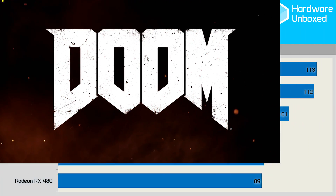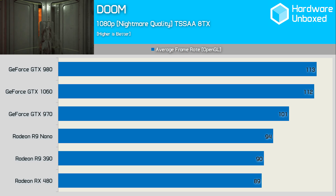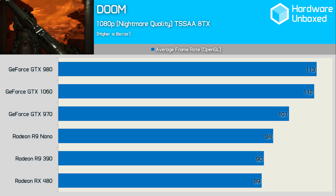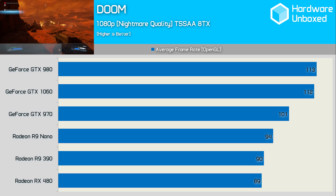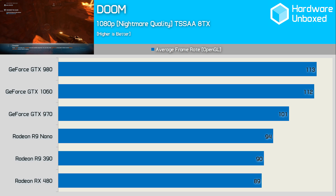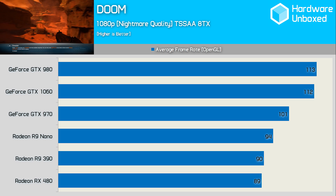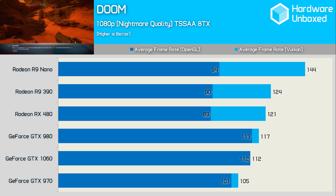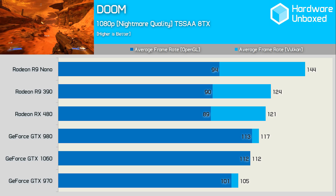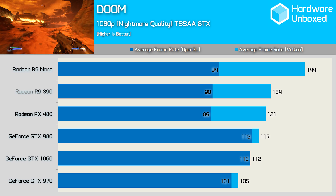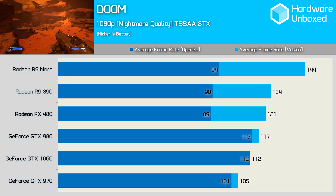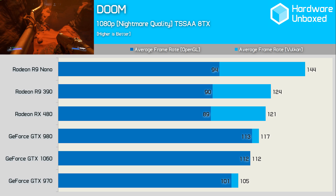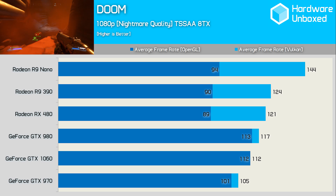Moving on, we find Doom with its recent updates supporting the Vulkan API. Prior to the update, the Radeon GPU struggled using OpenGL. Here we see the RX 480 was good for 89 FPS on average at 1080p, while the GTX 1060 pumped out 112 FPS — meaning the RX 480 was 21% slower using OpenGL. Now with Vulkan and Async Compute shaders enabled, thanks to the use of TSSAA, we see the GTX 1060 maintains that same 112 FPS average. The RX 480, on the other hand, gains an incredible 36% performance boost, making it now 8% faster than the GTX 1060.